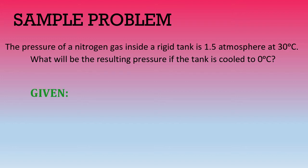Now, let's try to identify the given in this sample problem. We have P1, which is equal to 1.5 atm. T1, which is equal to 30 degrees Celsius, or when we convert that into Kelvin, that is 303 Kelvin.